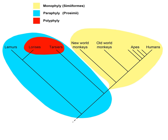On the broadest scale, definitions fall into two groups. Willi Hennig defined monophyly as groups based on synapomorphy, in contrast to paraphyletic groups based on symplesiomorphy, and polyphyletic groups based on convergence.